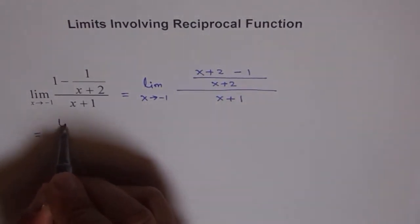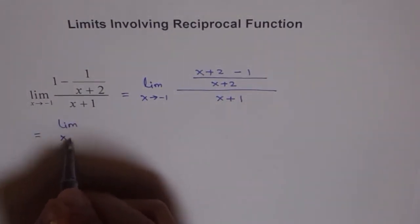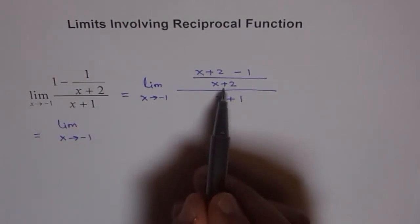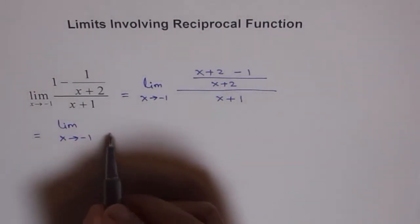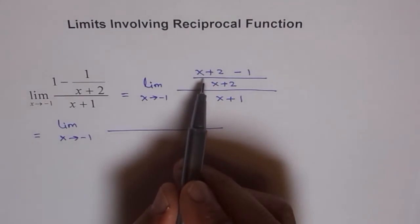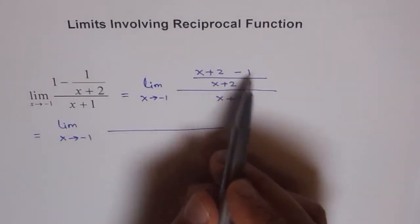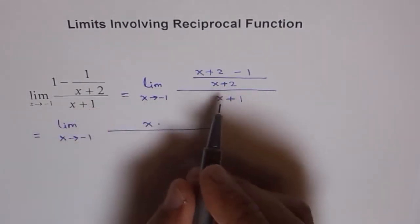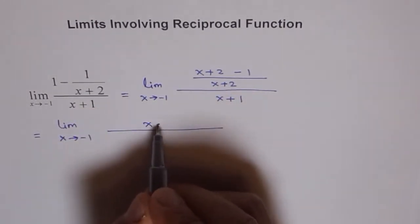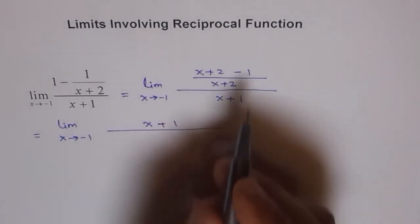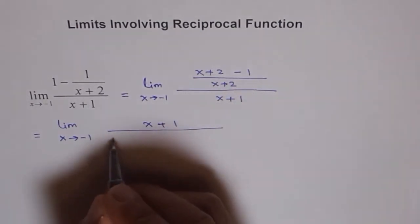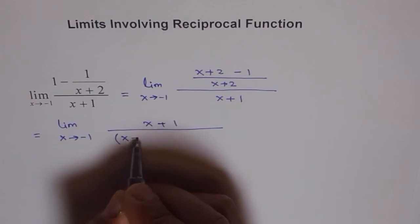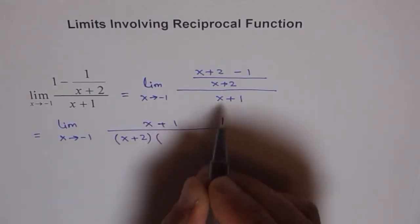Now this could be written as limit x approaches minus 1. Here this factor comes in the denominator and in the numerator we have x plus 2 minus 1 which is x plus 1 plus 2 minus 1 and this factor comes in the denominator. So we have x plus 2 times x plus 1.